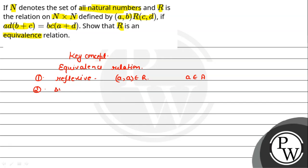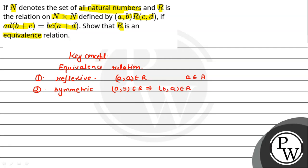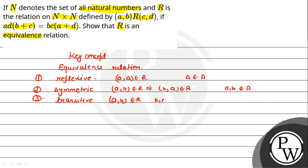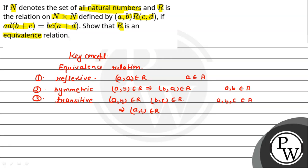The second one is symmetric — the condition is that if (a,b) belongs to R then (b,a) belongs to R, where A and B are elements of the set. Third, transitive: if (A,B) R (C,D) and (C,D) R (E,F), then (A,C) R should also hold, where A, B, C are elements of the set.